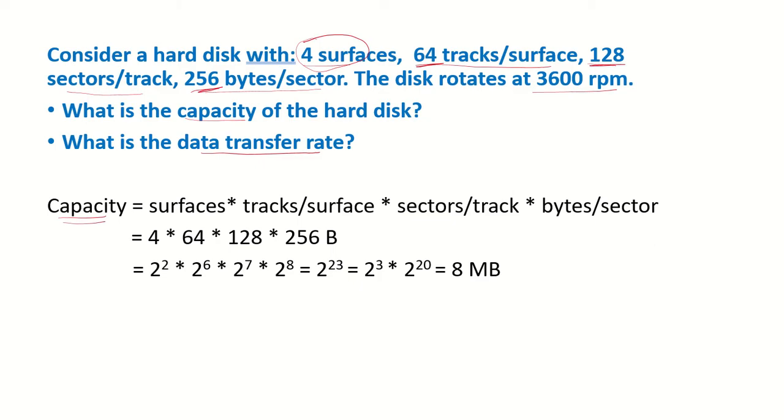So our capacity would be considering the surfaces, the number of tracks per surface, number of sectors per track and multiplied by the number of bytes per sector. So if you multiply 4 surfaces into 64 tracks per surface, 128 sectors per track, 256 bytes.